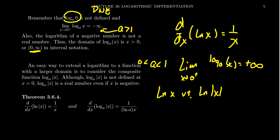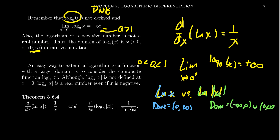The natural log of x has a domain of zero to infinity. But if we take the natural log of the absolute value of x, its domain is going to be negative infinity to zero, union zero to infinity. So it is possible to extend the domain to be all real numbers except for zero.